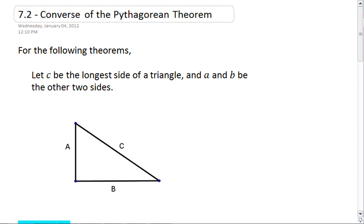What we learned in section 7.1 is that if we have a right triangle where c is the hypotenuse, then a squared plus b squared equals c squared.